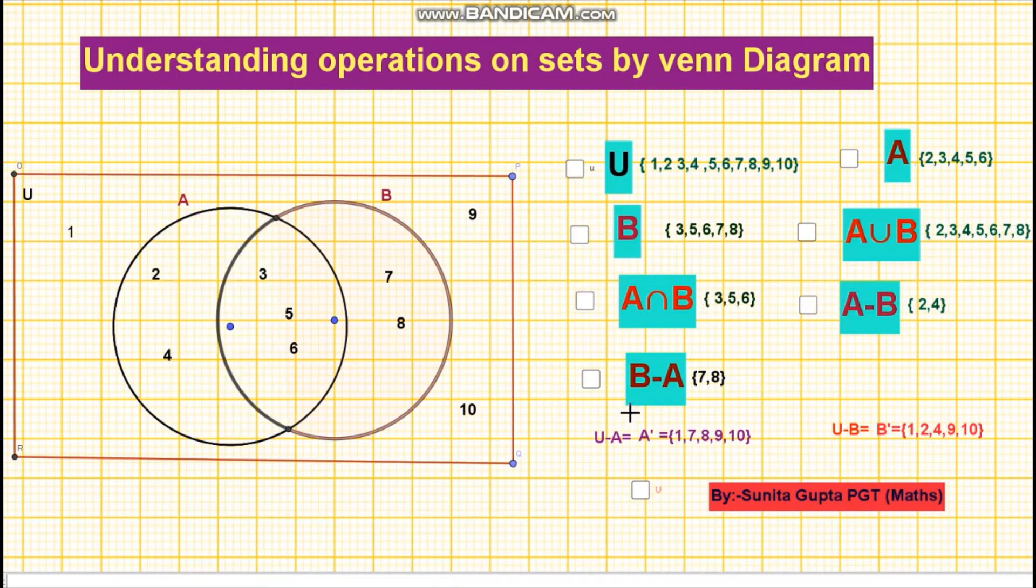Similarly for set B minus A, the set of all elements which belong to B but not to set A. So B minus A will be the shaded region as shown on your screen. So elements are 7, 8, because 7, 8 are included in set B but not in set A.